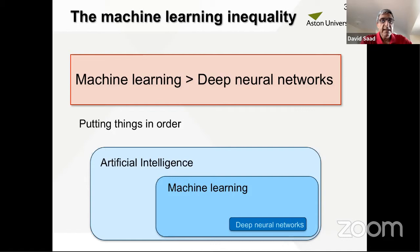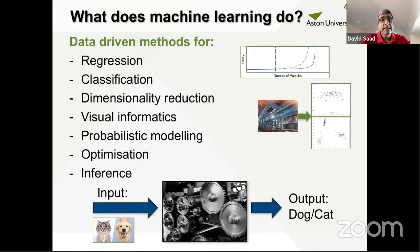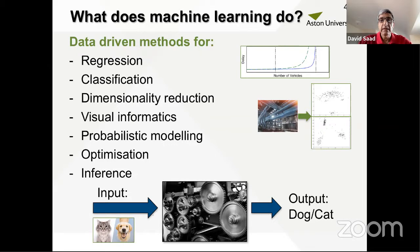The term machine learning has to some extent been hijacked by deep neural networks. Most people, when they talk about machine learning, mean deep learning. Machine learning is data-driven, and what it can do includes regression — identifying the best parameters for a given model — classification, dimensionality reduction taking measurements from high-dimensional space to low-dimensional space, probabilistic modeling, optimization, and inference of the state of variables in the system.